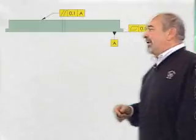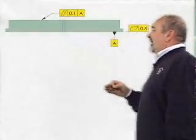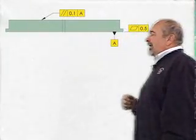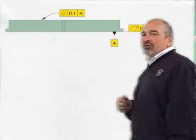Before I show you the drawing, let me say that I didn't use good practice on the drawing but I wanted to make a point. On this drawing, I put a flatness of 0.5 millimeters and then that becomes datum feature A.